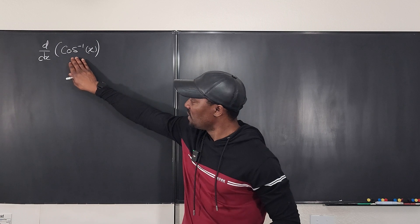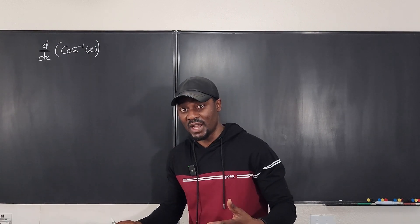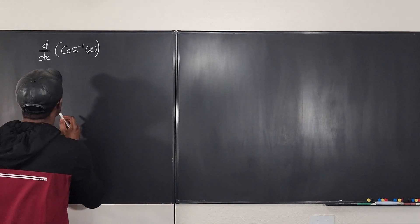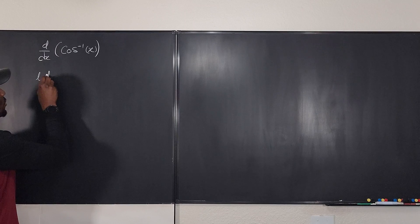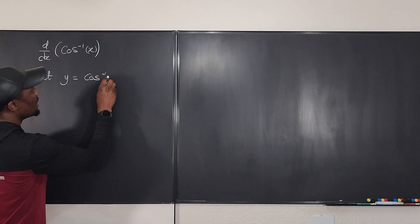So the first thing is to undo the inverse sign because we don't know how to do any algebra with the inverse sign. So we want to undo this. First, we're going to say that let y be equal to arc cosine of x.